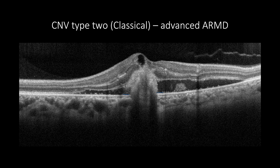Classical or subretinal CNV presents an RPE defect through which protrudes a subretinal hyperreflective amorphous material that contains a mixture of blood, fibrin, and new vascularization. This hyperreflective mass is associated with subretinal fluids or blood, with disrupted ellipsoid zone and external limiting membrane, and sometimes with intraretinal cystic changes.